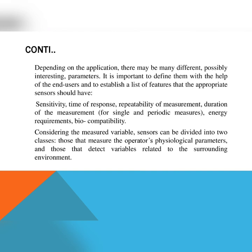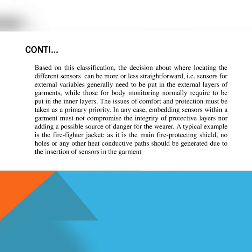The features are sensitivity, time of response, repeatability of measurements, duration of measurement for single and periodic measures, energy requirement, and biocompatibility. Considering the measured variable, sensors can be divided into two classes: those measuring the operator's physiological parameters, and those that detect variables related to the surrounding environment. Based on this classification, the decision about where to locate the different sensors can be more or less straightforward — sensors for external variables generally need to be in the external layer of the garment, while those for body monitoring normally require placement in the inner layers.